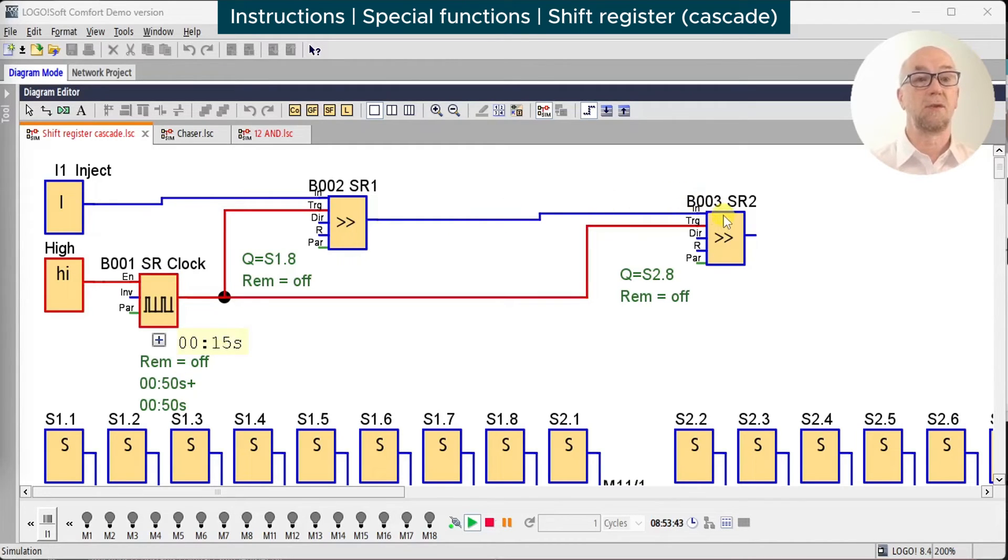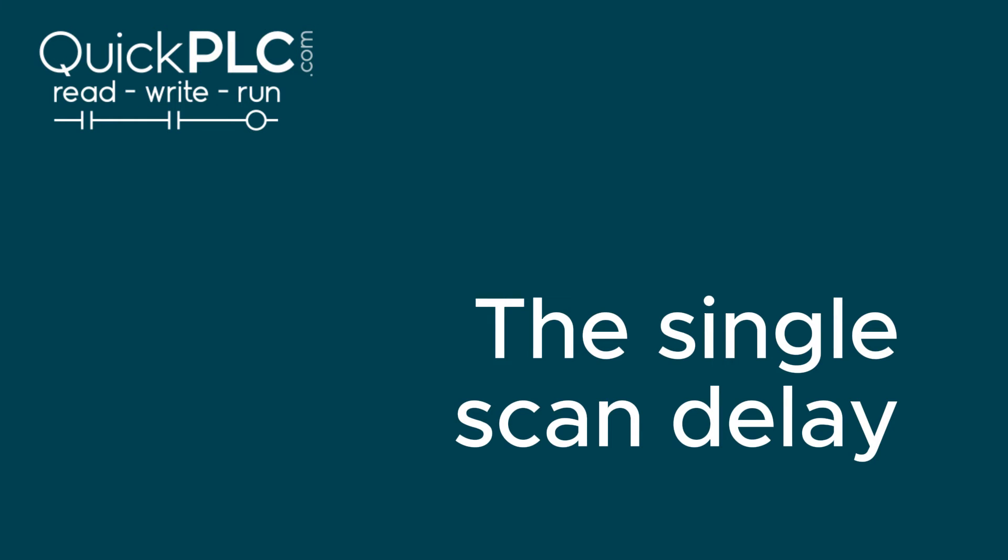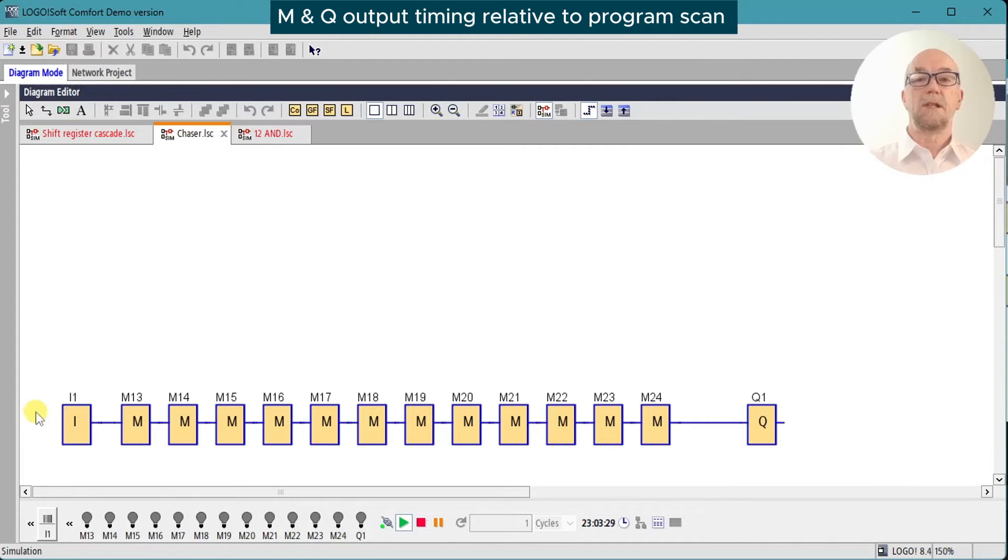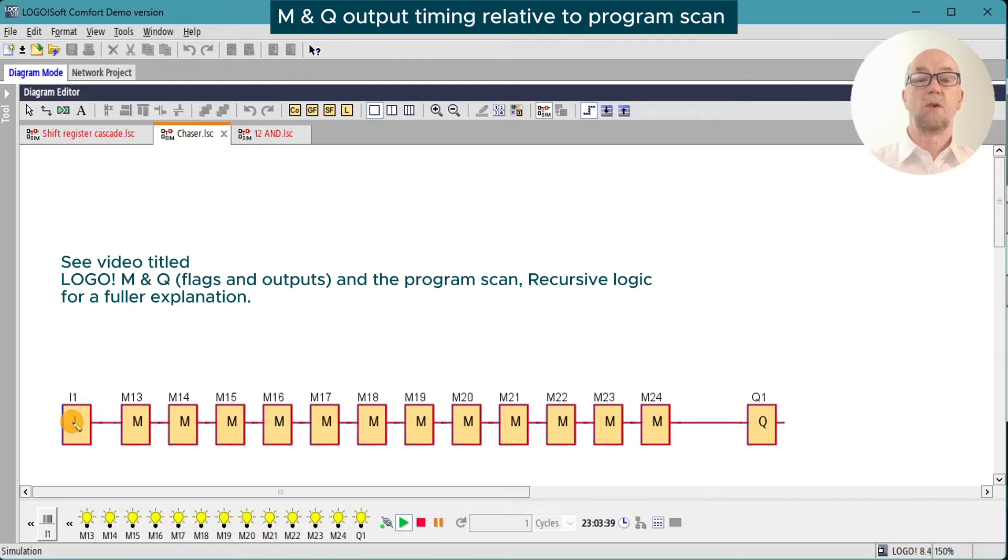To solve this problem, we need to delay the signal from shift register 1 to shift register 2's input by at least one program scan. To do this, we're going to use a trick we discussed in the Flags and Outputs video, and that is that the markers or flags and the outputs only get updated at the end of each cycle, effectively giving a one-scan delay for each. You can see it in the chaser effect on the bottom of the screen.